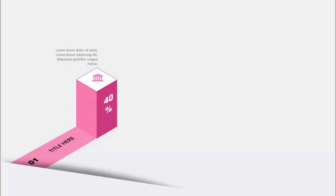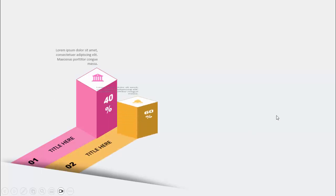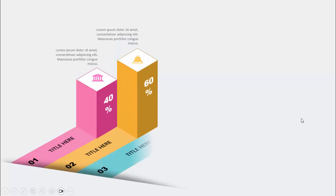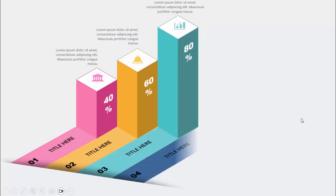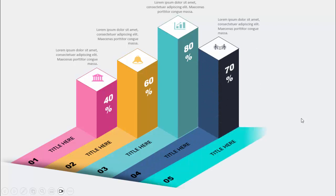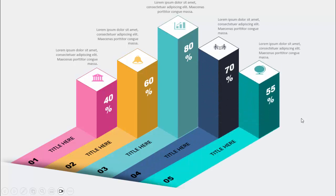In today's tutorial I'm going to show you how to create a 3D bar graph sliding PowerPoint. When I click it will show the first option with 47-40 percent, you can add some icon and detail text, and add the option number and title. Clicking through shows different color combinations for each option: second at 60%, third at 80%, fourth at 70%, and fifth at 55%. You can increase or decrease these percentages or the number of bar graphs as needed.